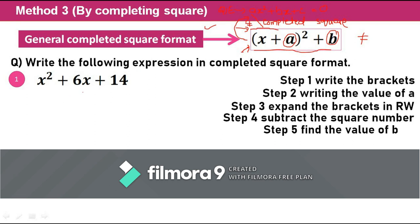Now let me show you how we can transform the quadratic expression into completed square format. Step number one: write the brackets. I have to write the bracket according to the format — I'm having a square with the bracket. I need to check which variable I am using in the question; here my variable is x, so I just wrote x here.